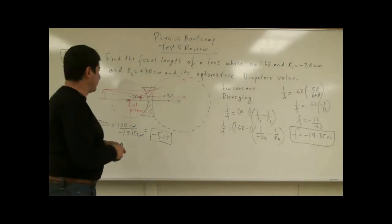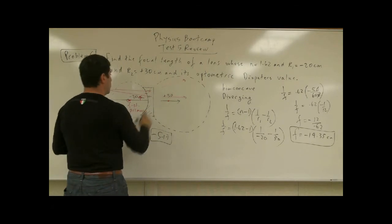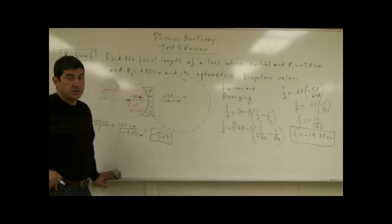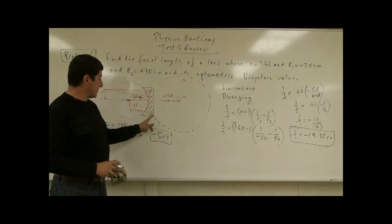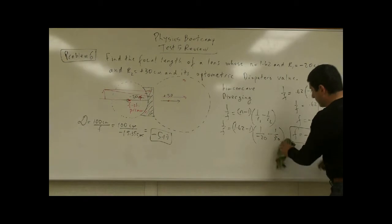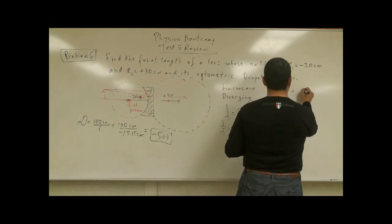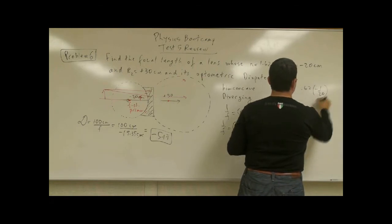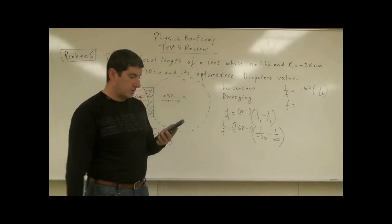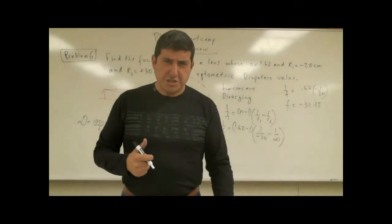Now let's look at a variation: make the back surface flat and only the front side curved. Would it still be a diverging lens? Yes. The flat surface has R2 = infinity, so 1/R2 = 0. The equation becomes 1/f = 0.62 × (−1/20), so f = −20/0.62 ≈ −32.25 centimeters. This is a larger (more negative) focal length, meaning a weaker lens.